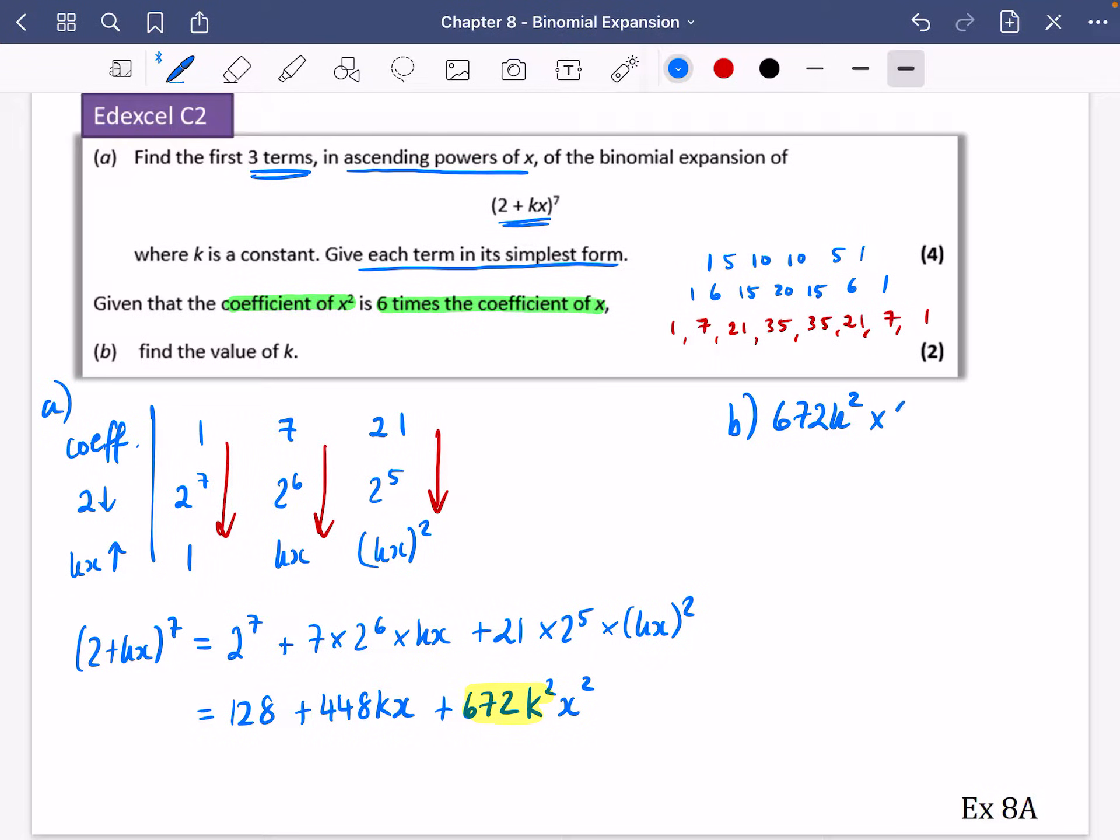So 672k squared. We want this to be 6 times bigger than the coefficient of x. The mistake I see people make is they go like, oh great, it says 6 times. So I'm going to times it by 6. But then that would mean that the other part is 6 times bigger than that one. So instead, we want the coefficient of x squared to be 6 times the coefficient of x. The coefficient of x, if I highlight it in green, is 448k.